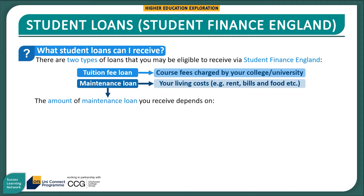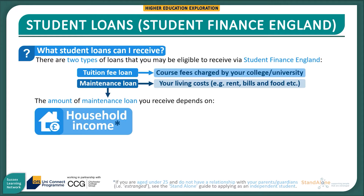The amount of maintenance loan you can receive depends on three main factors. First, household income. If you are aged under 25 at the start of your course, your parents' or guardian's household income will be assessed. If you do not have a relationship with your parents or guardians — in other words, you are estranged — see the standalone guide to applying as an independent student. If you will be aged 25 or over at the start of your course, your own household income is used instead.